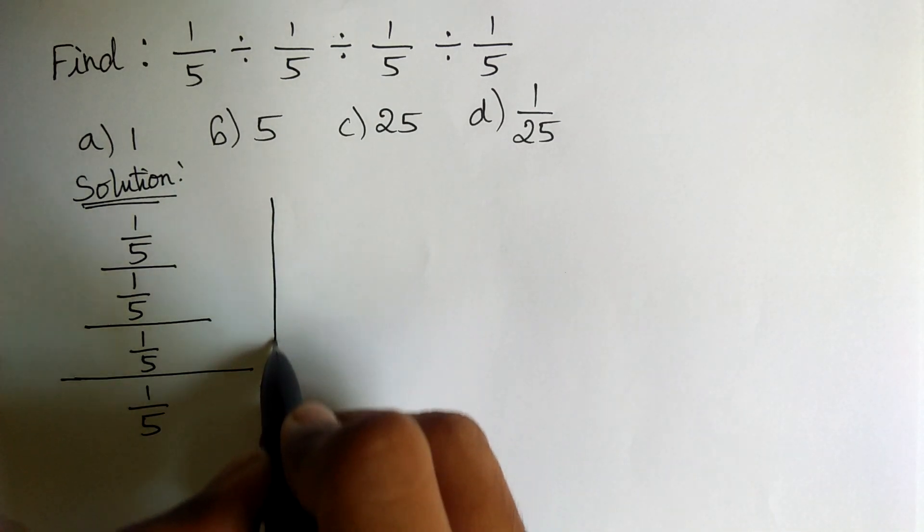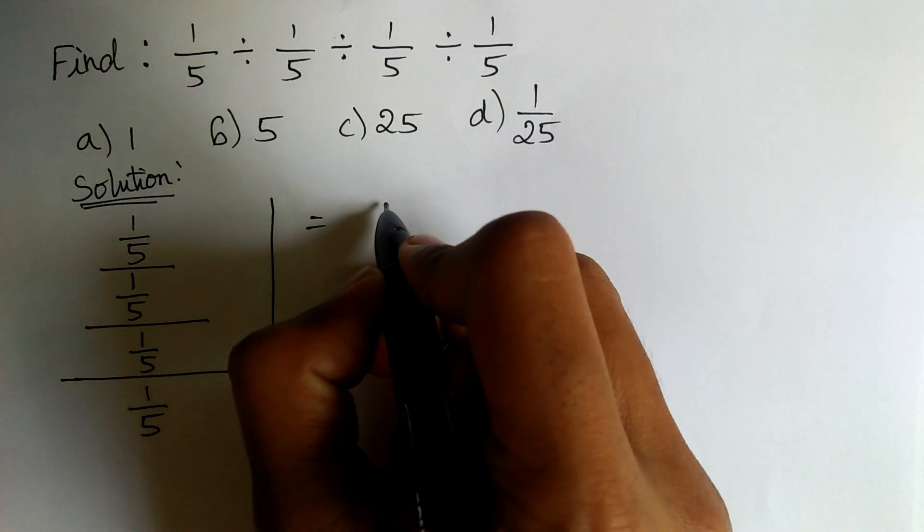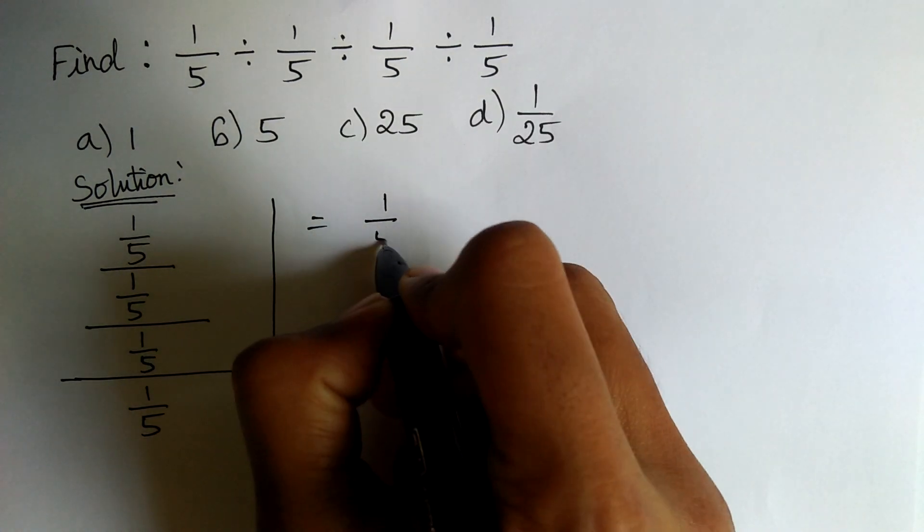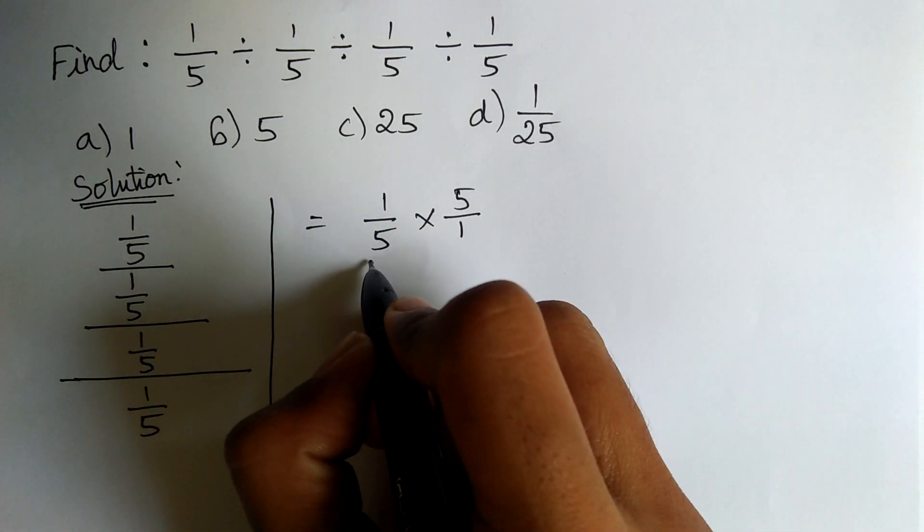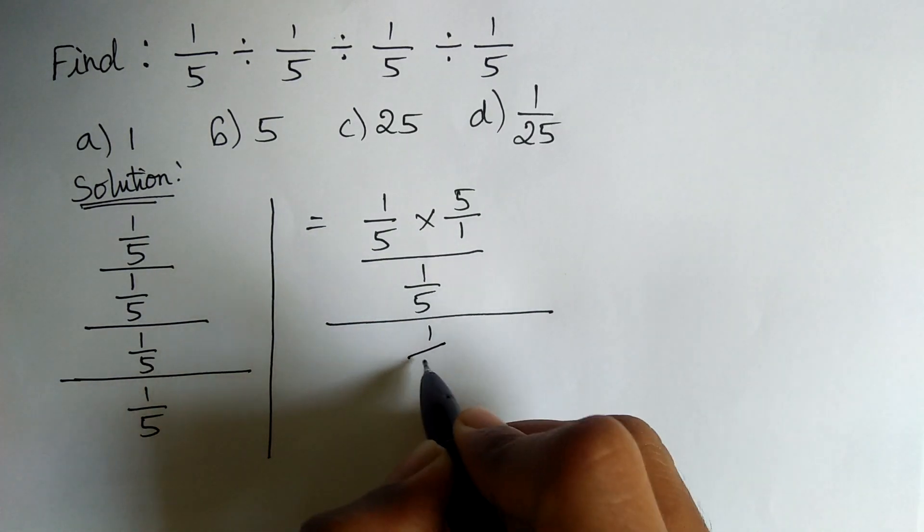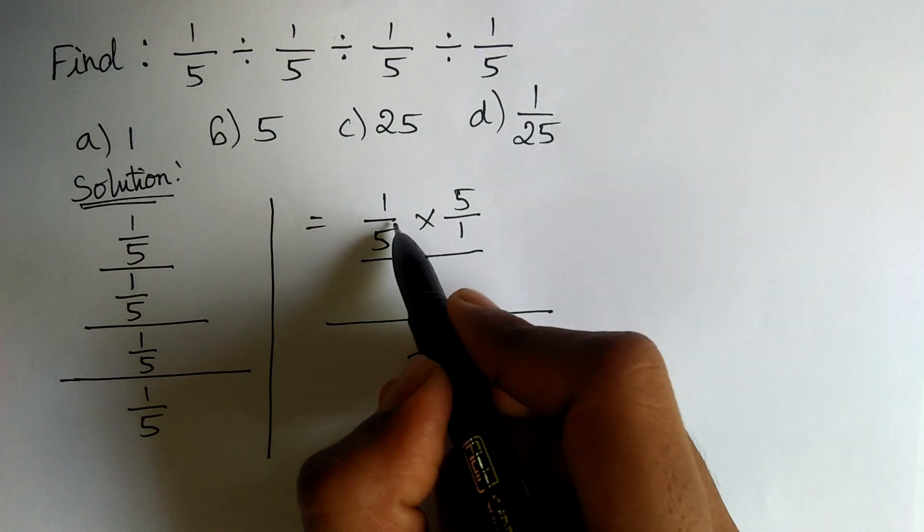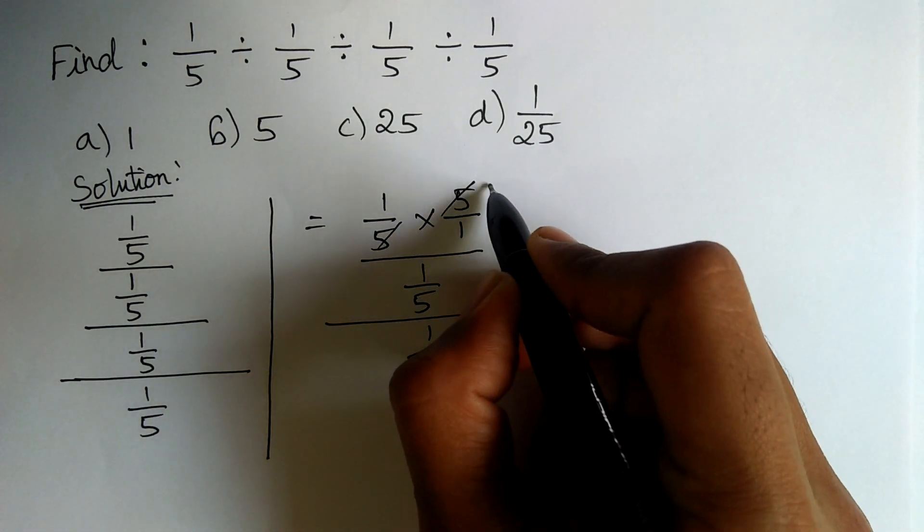Let's simplify this equation. 1 by 5 divided by 1 by 5 can be written as 1 by 5 into 5 by 1 divided by 1 by 5, the whole divided by 1 by 5. 5 and 5 gets cancelled, so we get 1.